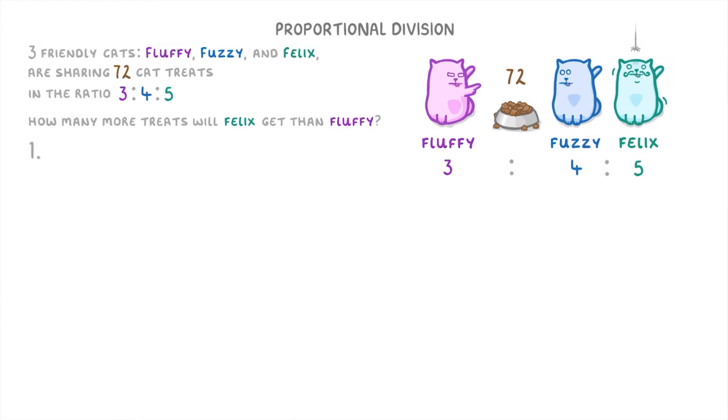So for this one, the first thing we need to do is find out how many parts 72 is being divided into. So we do 3 plus 4 plus 5, to get a total of 12 parts.